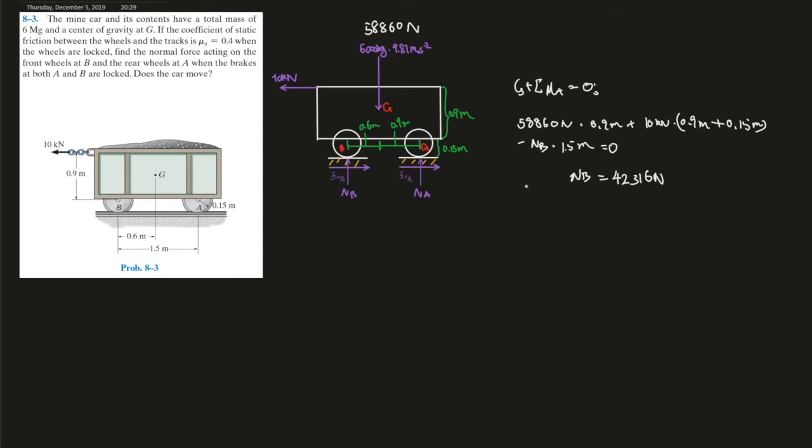and then we can use sum of the forces in y. Now we can finally use the sum of the forces at y going up as the positive, equals to 0. Well, in this case, nB already found what that is, is 42,316 newtons, minus 58,860 newtons, the weight of the car, and plus nA, the normal force at A, this whole thing gives you 0. Plug everything into your calculator, so for nA, nA should give you 16,544 newtons.